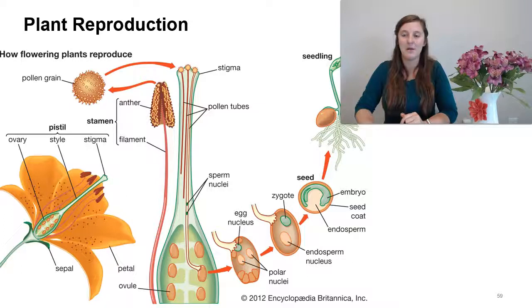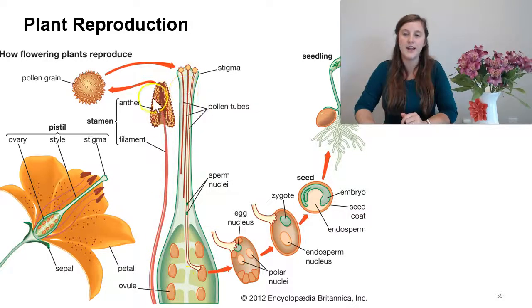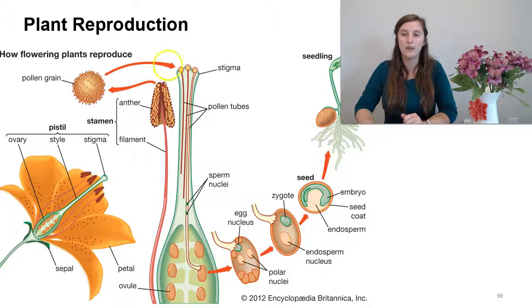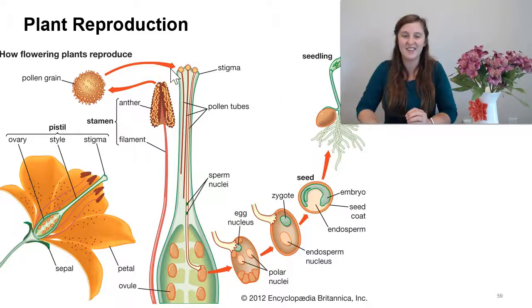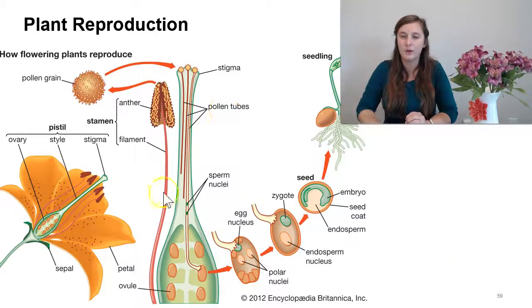Let's go through how plant reproduction actually occurs. We have all of our parts labeled. Here is our female part of the plant zoomed in, and then the male filament holding up the anther. On that anther there are individual pollen grains. Once that pollen grain — maybe from a pollinator such as a bee, or by the wind — gets to the female part, it gets to this stigma which is sticky, so it adheres. Once the pollen grain adheres to the stigma, a pollen tube grows from the pollen grain to the ovule.